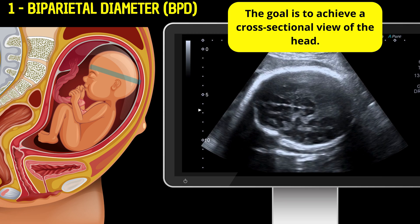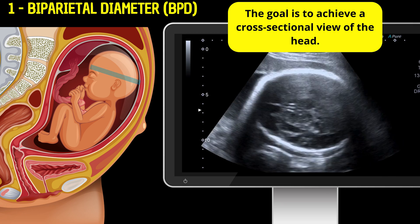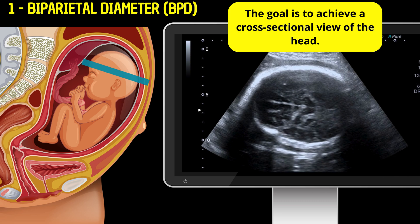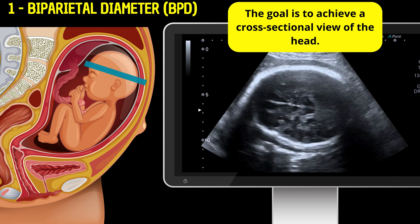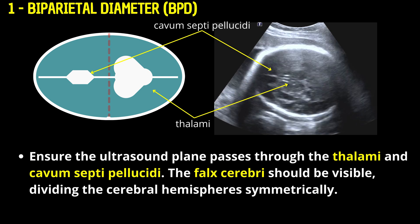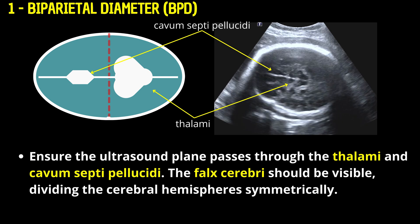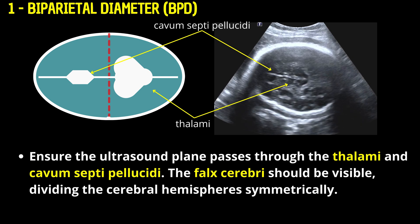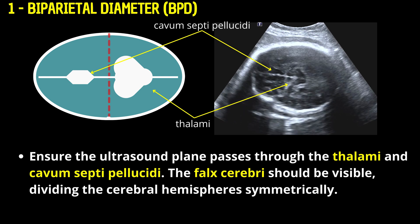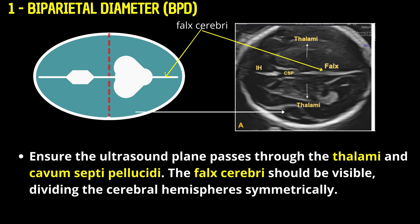Biparietal diameter — positioning the probe: Place the probe transversely on the mother's abdomen, aligned with the fetal head. The goal is to achieve a cross-sectional view of the head. Ensure the ultrasound plane passes through the thalami and cavum septi pellucidae. The falx cerebrae should be visible, dividing the cerebral hemispheres symmetrically.